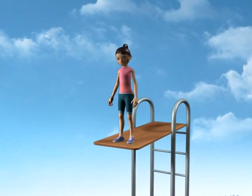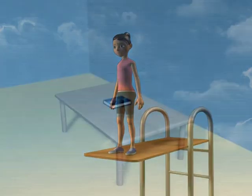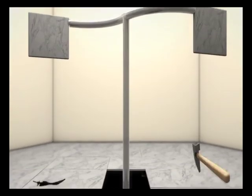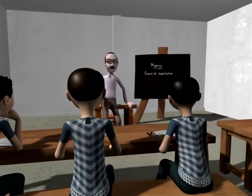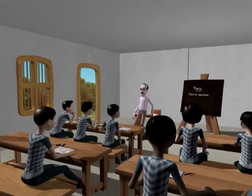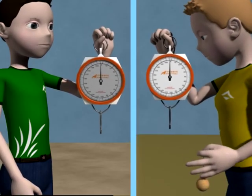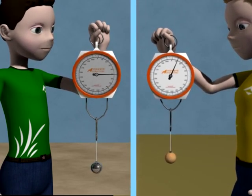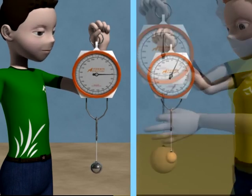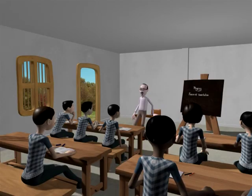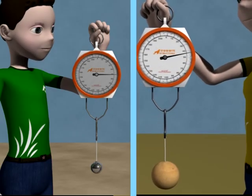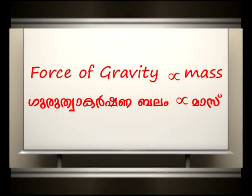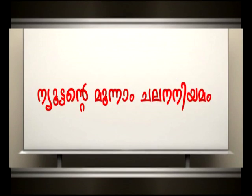But if the object is supported by something, it does not fall down. So the force of gravity is dependent on certain factors. Let us find this. Hang two balls of the same size on a spring balance — one made of wood and the other made of metal. You can see the metal ball weighs more. Now take a wooden ball of double the radius. You can see the wooden ball weighs more than the previous ball. So what conclusion did you reach? The force of gravity experienced by a body is directly proportional to its mass.